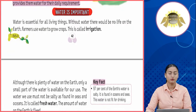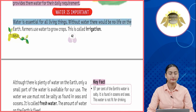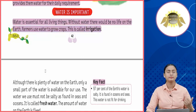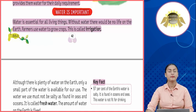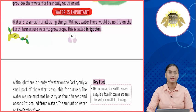Water is important — paani zaruri hai. Water is essential for all living things; without water, there would be no life on earth. Farmers use water to grow crops, which is called irrigation. Toh paani jo hai wo human beings ke liye bhi important hai aur saath hi saath paudho aur janwaron ke liye bhi. Paani jo hum farms mein paudho ko ugane ke liye use karte hain, isse kaha jata hai — irrigation.